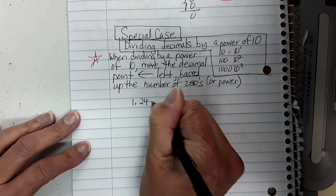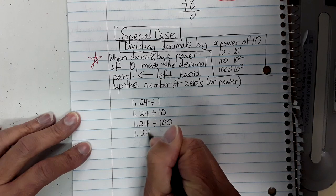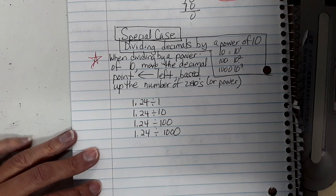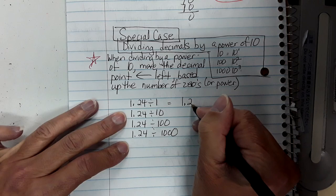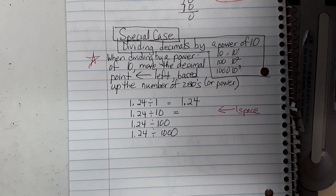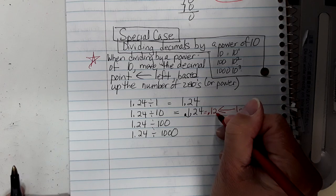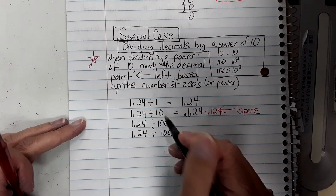Let's look at some examples: one point two four divided by one, by ten, by one hundred, and by one thousand. Divided by one gives one and twenty-four hundredths. Divided by ten — move the decimal point one space left — gives zero point one two four, which is one hundred and twenty-four thousandths.